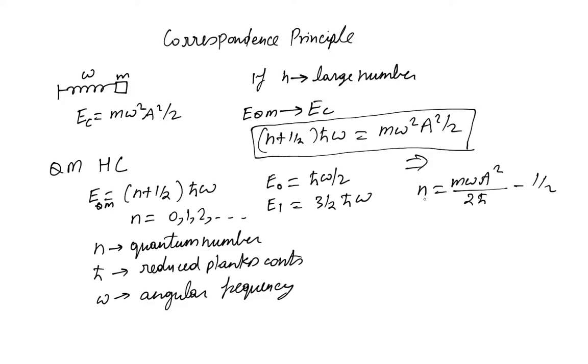If we pick up some standard values of mass, let's say a kilogram, some standard values of amplitude, let's say a meter or 10 centimeters, and standard values of omega which we see in day-to-day life, we'll see that N actually is of the order of 10 to the power 33.